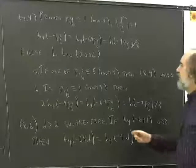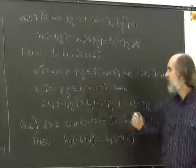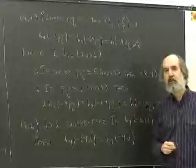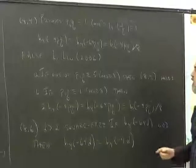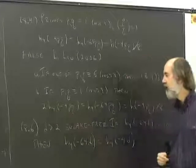The correct version is here. If 1 of pq is 5 mod 8, then the original equation holds. If both p and q are 1 mod 8, then you need this extra factor of 2 in front.